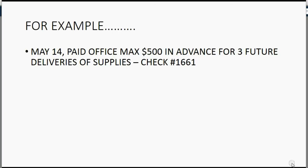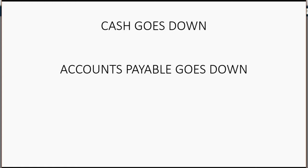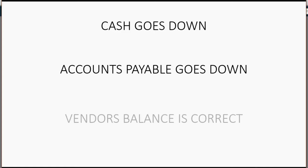For example, on May 14th we paid Office Max $500 in advance for three future deliveries of supplies, using check number 1661. Under this method, cash will go down because we paid a vendor, and accounts payable will also go down because paying a vendor decreases accounts payable. That particular vendor's balance will go negative, but the individual vendor's balance will be correct in vendor reports like the vendor balance detail and the unpaid bill report.